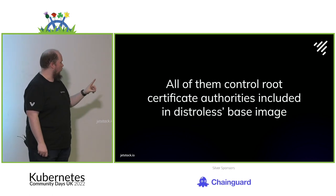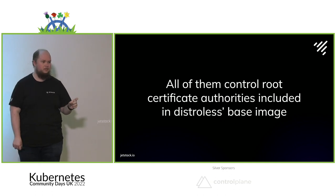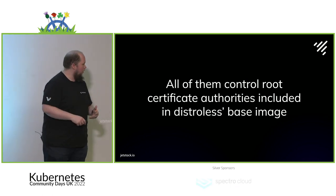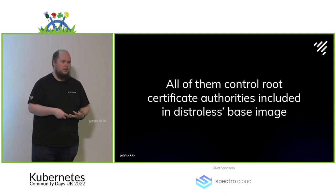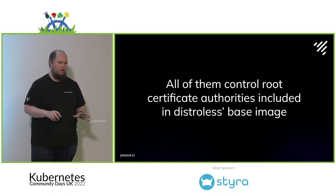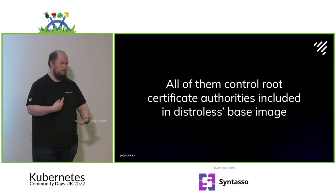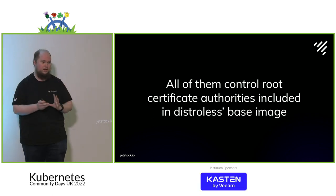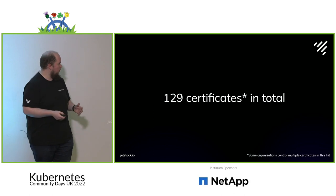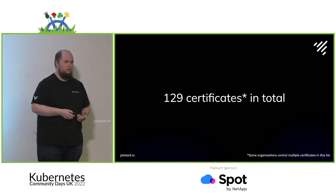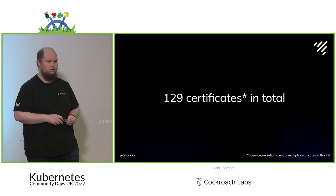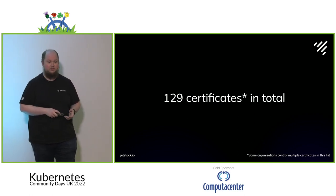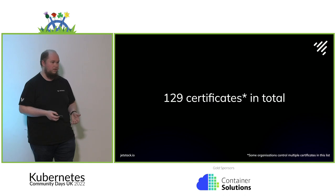Those groups all control root certificates in the default bundle that is in Distroless — in the Distroless base image, as of the last time I checked a couple of days ago. That means any of those groups can issue a certificate which can be trusted by a container built on Distroless for any domain, because certificate authorities are not tied to specific sets of domains. In Distroless, there are 129 certificates. Some organizations have multiple — that's a lot of certificates you are trusting when you build your things. And it's not just Distroless — the same is true of nearly everything else.